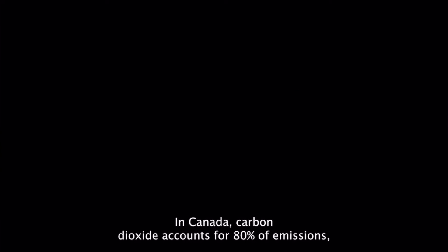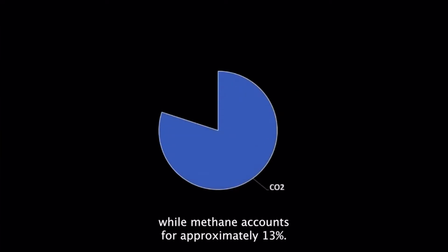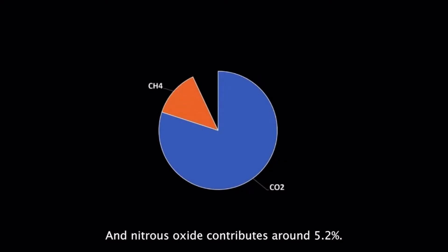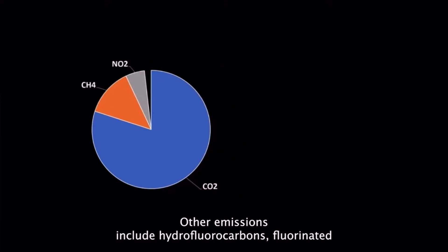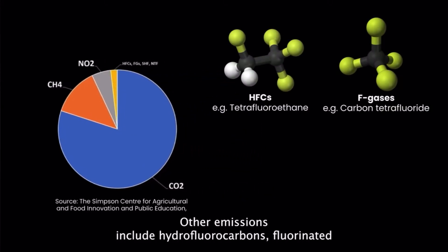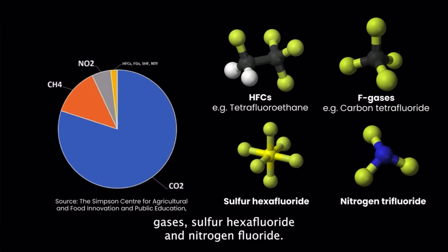In Canada, carbon dioxide accounts for 80% of emissions, while methane accounts for approximately 13%, and nitrous oxide contributes around 5.2%. Other emissions include hydrofluorocarbons, fluorinated gases, sulfur hexafluoride, and nitrogen trifluoride.